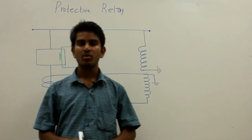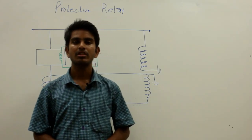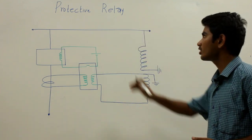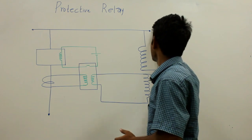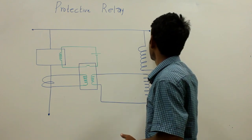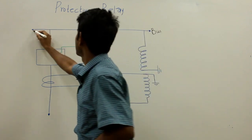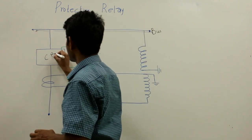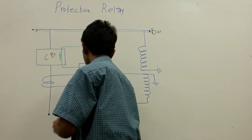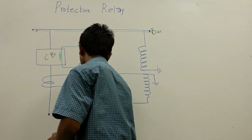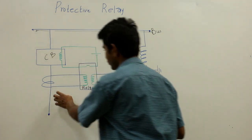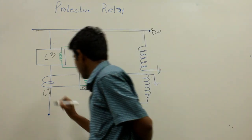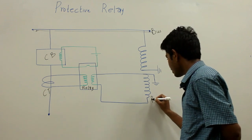Hello friends. In this video let us discuss about the protective relays using power system protection. This is a basic connection diagram of your protective relays. Here you are having the bus, the circuit breaker, and this is your relay. We are using instrument transformers here — this is your current transformer and this is your potential transformer.